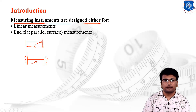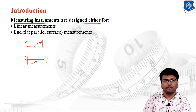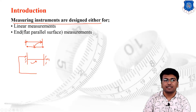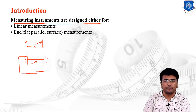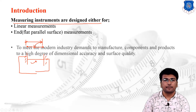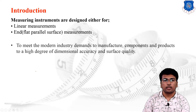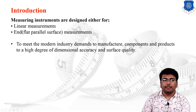To perform linear measurement we use some sort of scales, whereas to perform end measurement we use instruments such as vernier caliper, micrometer, vernier depth gauge, height gauge, and a number of other instruments provided for measurement of such end surfaces.